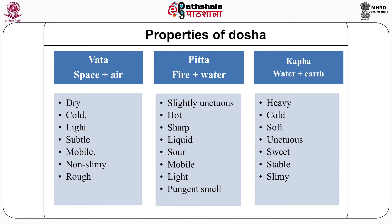The dosas exist at all levels from the macroscopic to the cellular level, indicated by their functions and associated properties. Just as functions include structures, dosas also encompass structural entities, which can be inferred from the physical attributes associated with them. The three dosas are constituted of the Panchamahabhutas. The properties of space and air are represented as vata in the body; the properties of fire and water are referred to as pitta; and the properties of water and earth are represented as kapha.